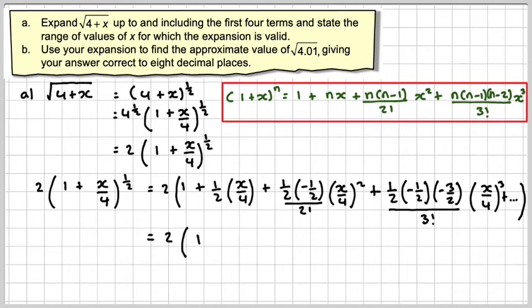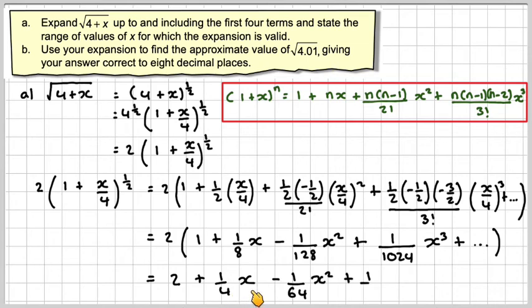So that will give 2 times 1 plus 1 eighth of x plus 1 over 128 of x squared. So you have to be a bit careful. Maybe use the fraction button on your calculator and don't forget to square the 4, and the next one will be plus 1 over 1024 x cubed. We need to multiply through by 2, so that will become 2 plus 1 quarter x minus 1 over 64 x squared plus 1 over 512 x cubed.